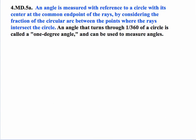Let's focus on part A. The first statement is really the meat and potatoes here. An angle is measured with reference to a circle with its center at the common endpoint of the rays by considering the fraction of the circular arc between the points where the rays intersect the circle.